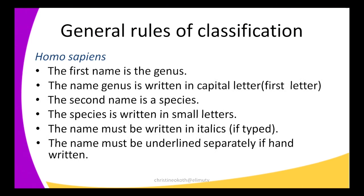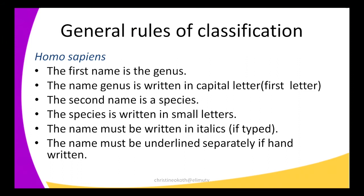So let us look at the general rules we use when classifying organisms. For example, I have the scientific name Homo sapiens for human being. Rule number one: the first name is a genus — looking at my example, Homo is the genus. Rule number two: the genus name is written with a capital first letter. So in Homo, the H is written as a capital letter while the others are written in small letters.